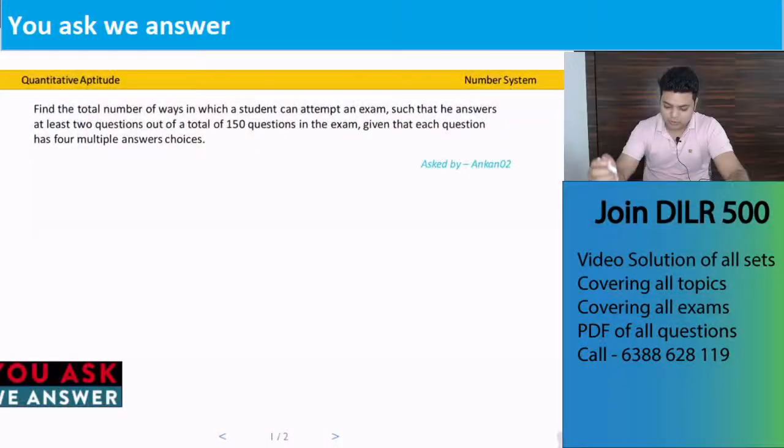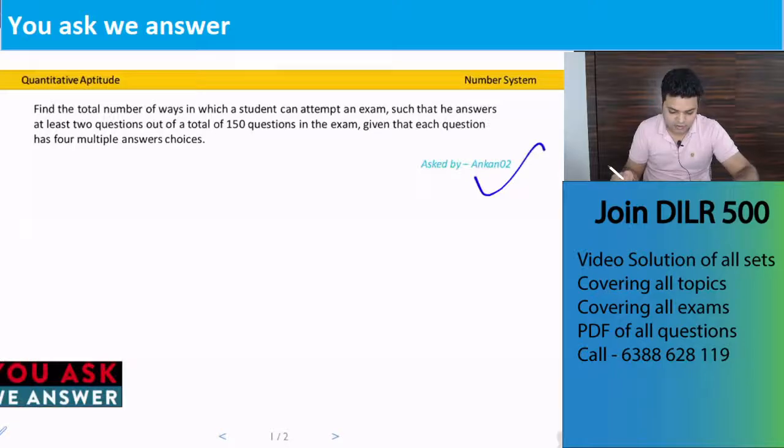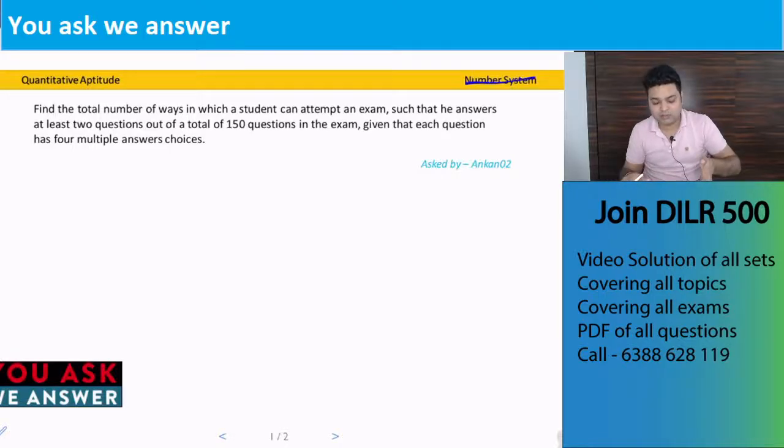Hello everyone, I'm going to answer this question asked by Ankan. It's a question of permutation and combination. Find the total number of ways in which a student can attempt an exam such that he answers at least two questions out of a total of 150 questions in the exam, given that each question has four multiple answer choices.